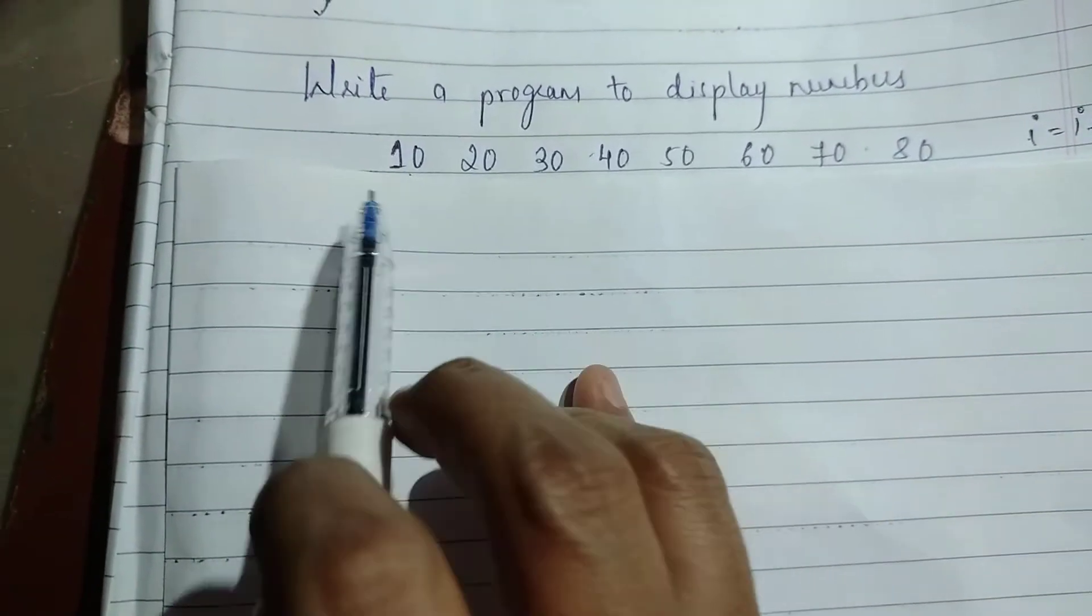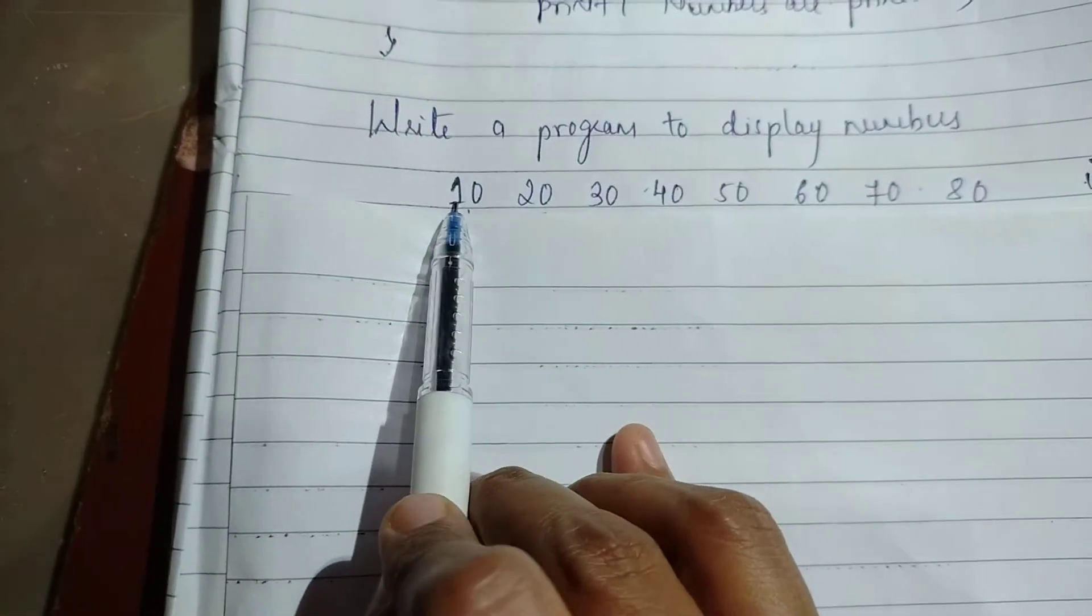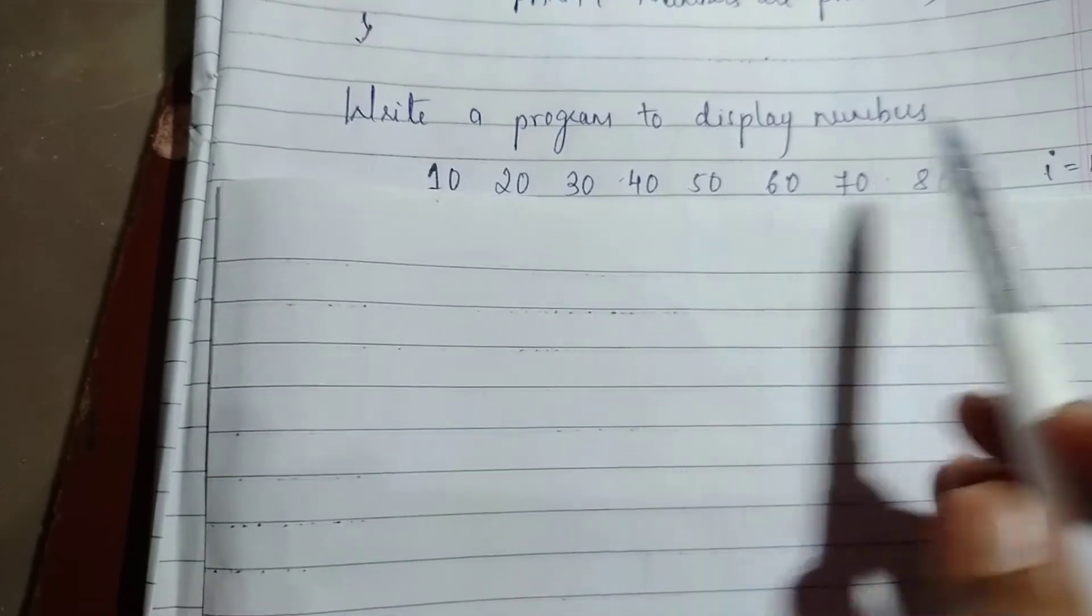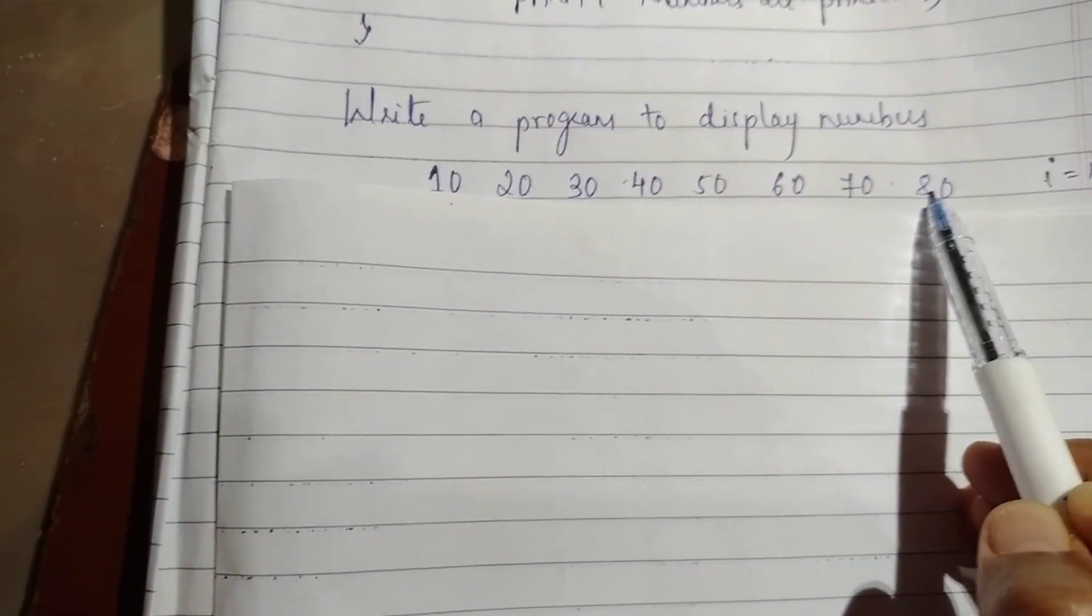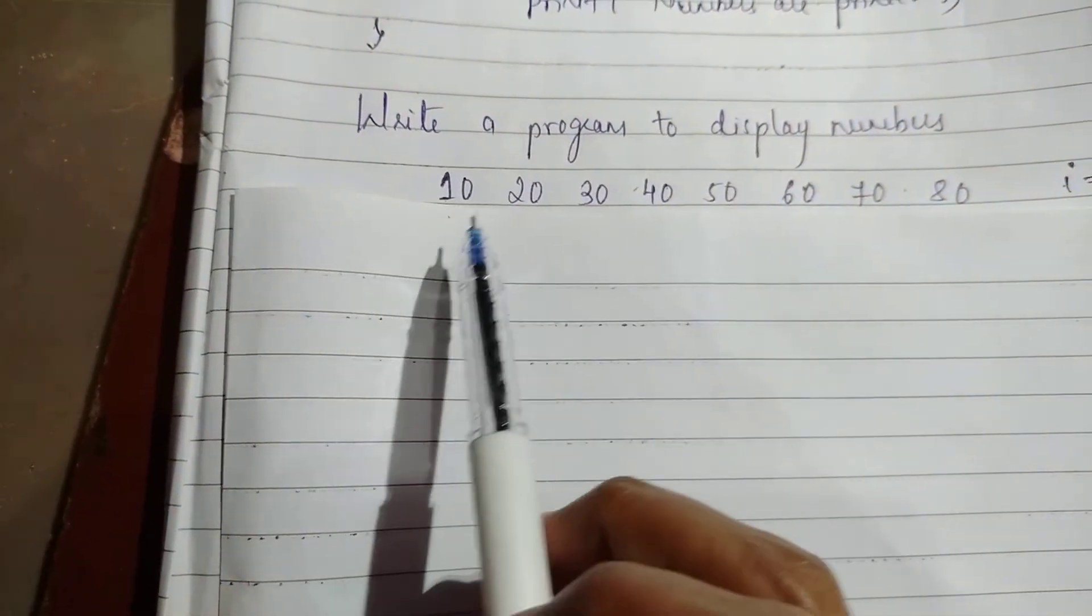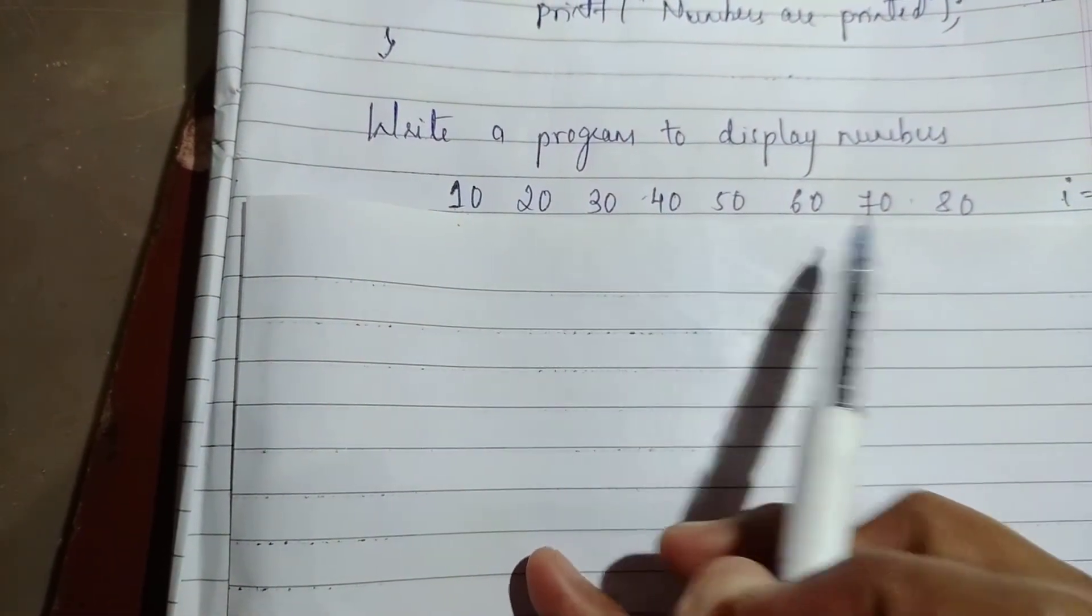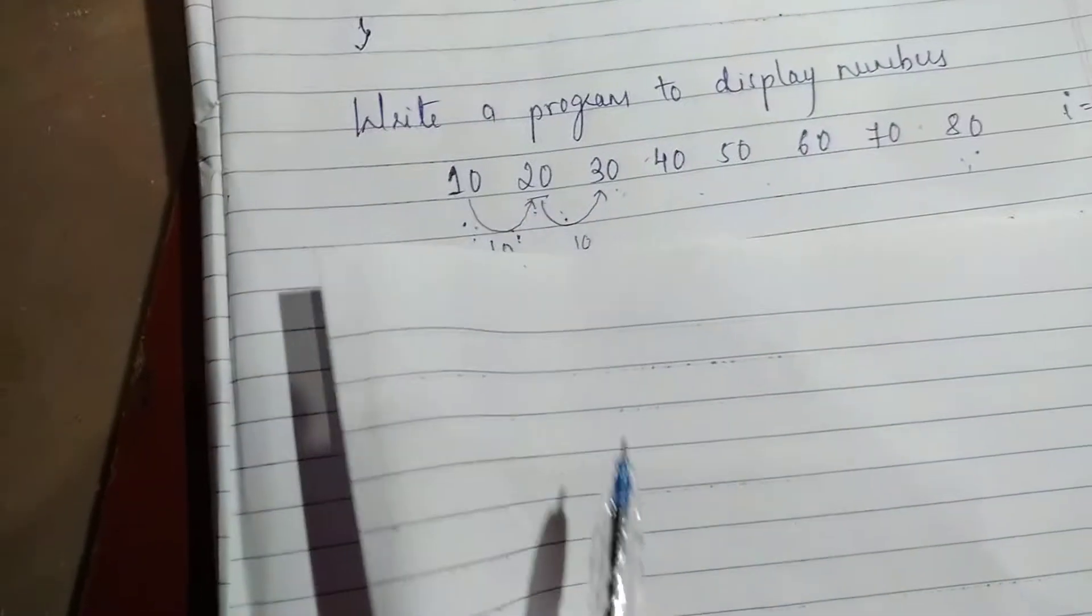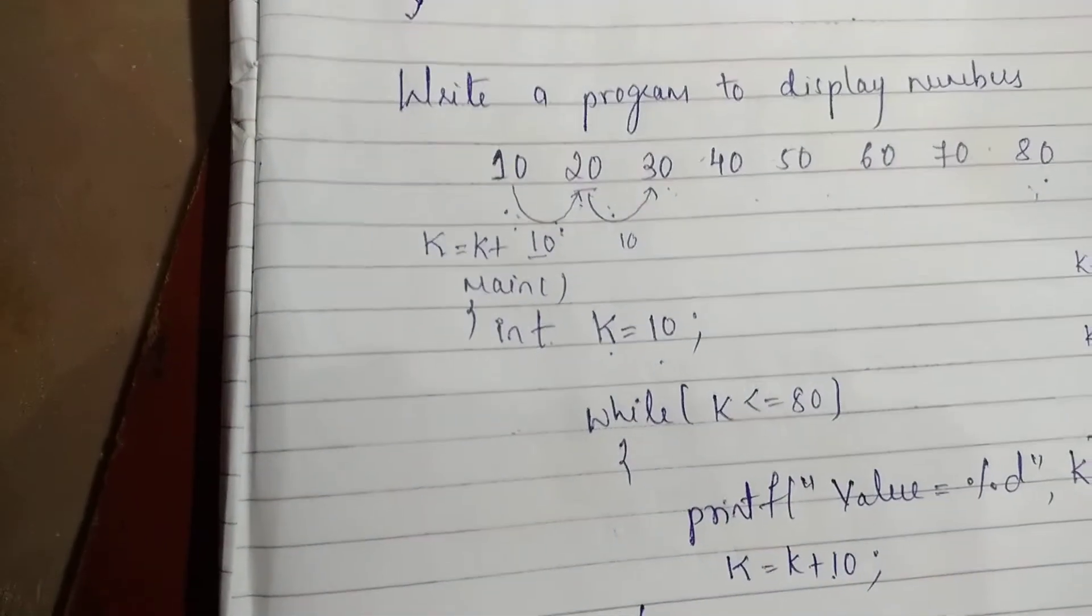Now it's very simple. The initial condition is 10 and the final condition is 80. The difference between every number is 10. I have already written a program, so let us have a glance at that.